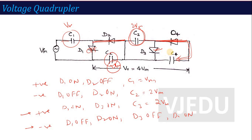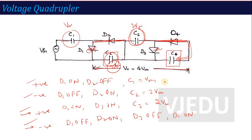This is how the Quadrupler works. The output voltage of 4VM is obtained because C2 has 2VM across it and C4 has 2VM across it — their combined voltage gives 4VM in total. This 4VM output is obtained after completing two full input cycles (positive half, negative half, positive half, negative half). After these two cycles, we get the Voltage Quadrupler output.